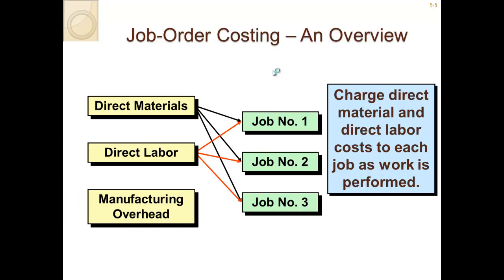In job order costing, you charge direct materials and direct labor to each job as the work is performed. For example, construction companies have multiple projects going on at once. Certain employees are on job one, others on job two, and others on job three. You directly assign each employee and their time to the job order they were working on that day, week, or month.